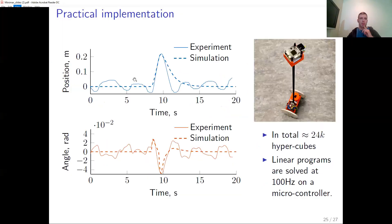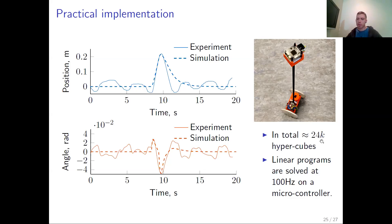Let's return to the practical implementation. We consider a two-wheeled robot which tries to balance itself, certifying the region of state space of interest to provide an approximate explicit optimal control law. In total, it took around 24,000 hypercubes to certify the control for this robot. The linear programs to compute the barycentric coordinates of interest are solved at 100 Hz on a microcontroller chip. As you can see from the measurements, it was able to recover from an impact at approximately time equals 10, and it coincides quite well with simulation.